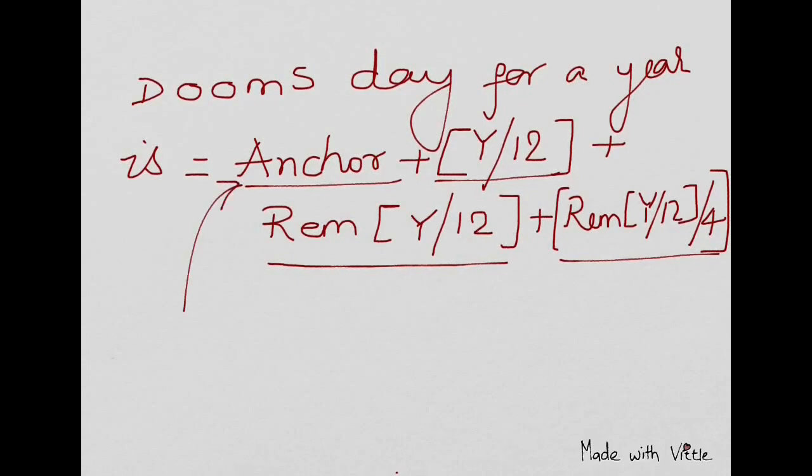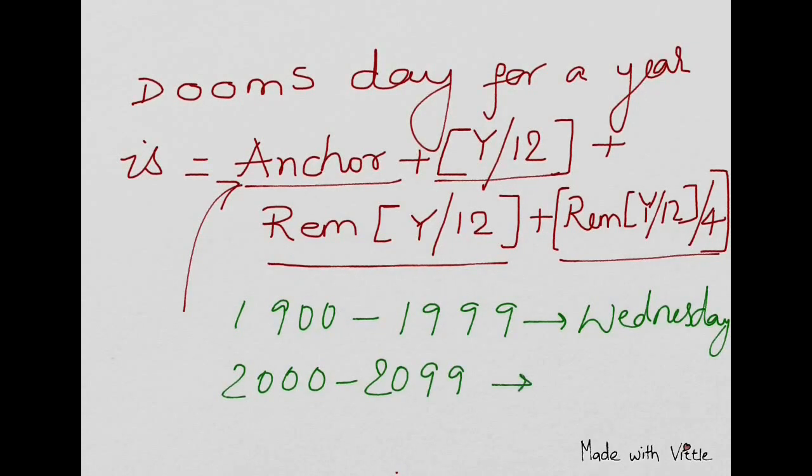For example, what is the anchor? Every certain hundred years will have a certain day. For 1900 to 1999, the anchor is Wednesday. For 2000 to 2099, the anchor is Tuesday. Questions are mostly asked from 1900 to 1999 or 2000 to 2099.